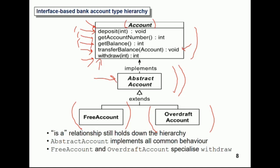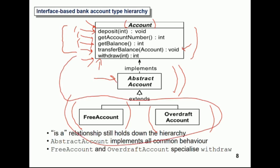So in this case deposit, get account, get balance, and transfer balance would go into the abstract account, and withdraw would go into the lower levels. Notice that the relationship holds down the hierarchy — an overdraft account is an abstract account, is an account. Abstract account implements all the common behavior, and free account and overdraft account specialize withdraw.